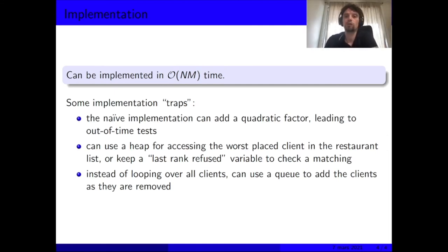How you could improve this is, for instance, use a heap to access the worst-placed client in the restaurant list. There are other ways in which you keep a counter of the last rank that was refused by the restaurant. Also, instead of looping over all clients at every step, you can use a queue to add the clients as they are removed.